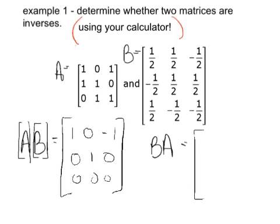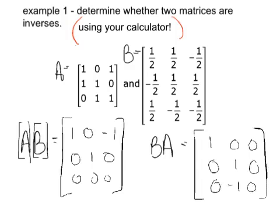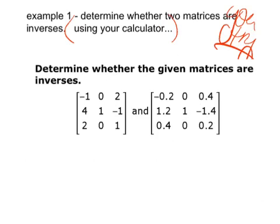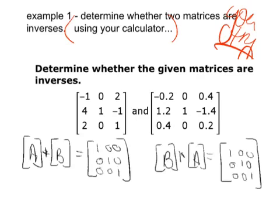If you had put them in backwards and tested B times A first, you would have gotten a different result. Multiply B times A and you'd need another identity matrix to confirm. Going ahead — my calculator spits out an identity matrix for both B times A and A times B, so we're good.